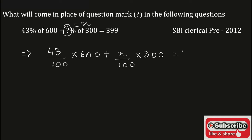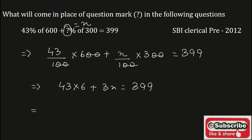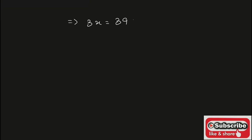This is equal to 399. Cancel the zeros: 43 into 6 plus 3x is equal to 399. Now 43 into 6 is equal to 258, so 258 plus 3x is equal to 399. Send the term from the LHS to the RHS.